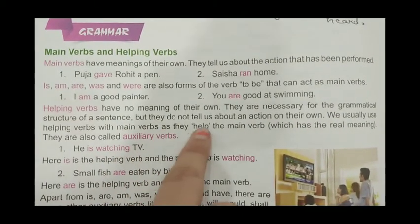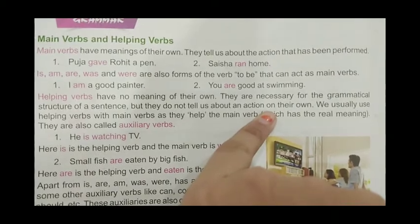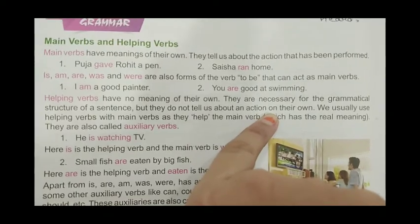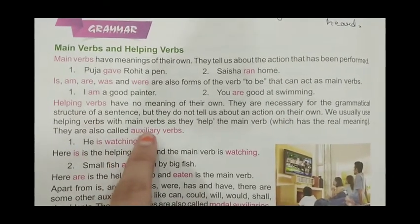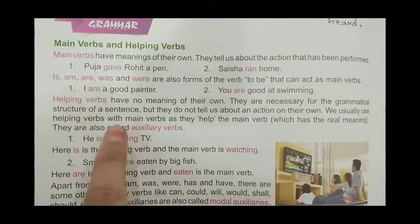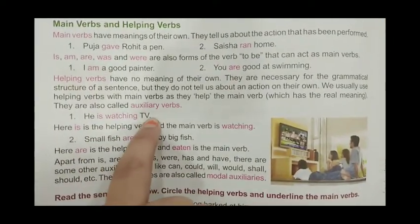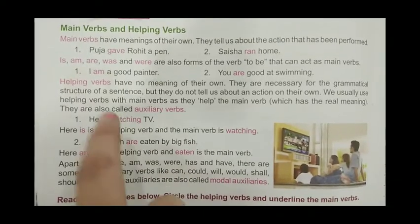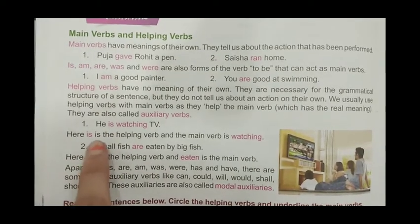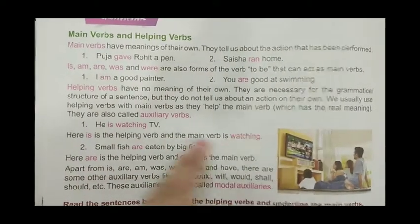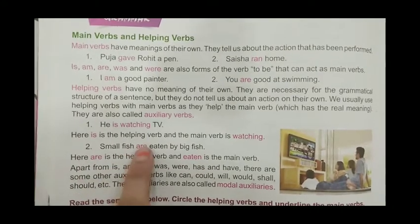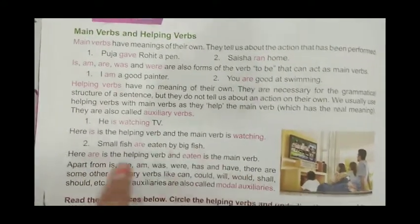We usually use a helping verb with a main verb. For example: 'The boy is watching TV' — here 'is' is the helping verb and 'watching' is the main verb. 'Small fish are eaten by big fish' — chhoti fish ko badi fish khaa jaati hai — here 'are' is the helping verb and 'eaten' is the main verb.